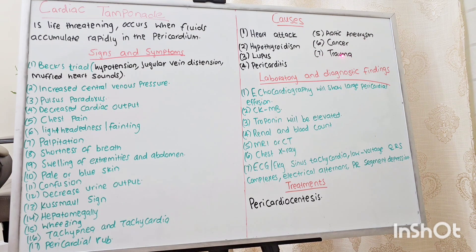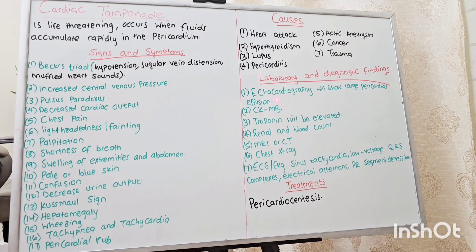Now let's discuss laboratory and diagnostic findings for cardiac tamponade. The first one is echocardiography, which will show large pericardial effusion. They can also draw CK-MB and troponin, which will be elevated, as well as renal panel, complete blood count, and MRI or CT scan.